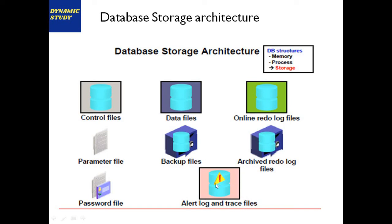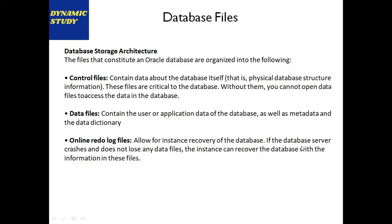Alert log and trace files contain the logs of the database — change logs, critical information, and log switch events. Database files are mainly of three types: control files (containing physical database structure information — how many DBF files, tablespaces, redo log file groups), data files (actual physical data for all tables and the whole database), and online redo log files.